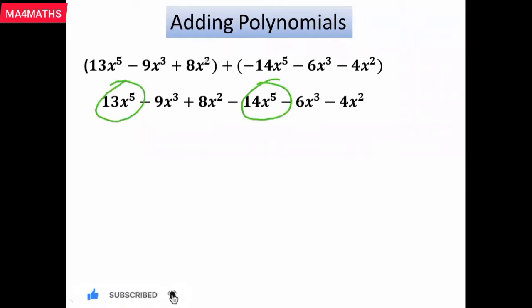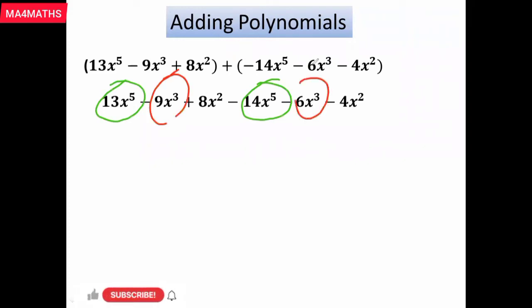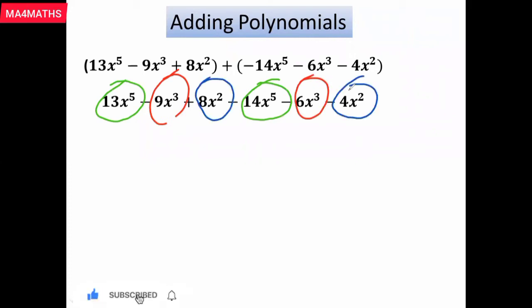Here we can only add minus 14x^5 with the 13x^5. We can add only the x^3 term with the x^3 term, and we can add only the x^2 term with the x^2 term.